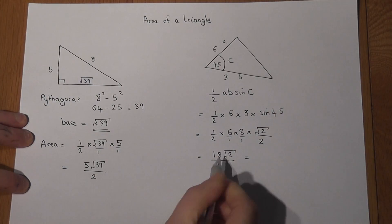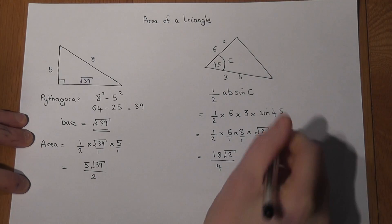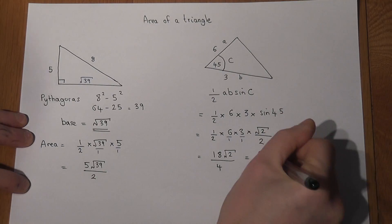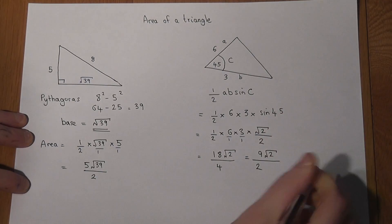And then to finish off, 18 and 4 can both be halved, so it's 9 over 2 with the square root there as part of the answer. So the area is 9 root 2 over 2.